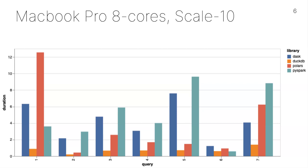On my MacBook Pro at scale 10: Dask is no longer dog slow. DuckDB is just way faster than everybody else — really impressive as a technology. Polars and DuckDB are both well-optimized for the 10-gigabyte scale. There's generally a correlation between DuckDB and Polars and between Dask and Spark. Also note that Dask isn't way slower than Spark — we're actually faster than Spark on this single machine case.